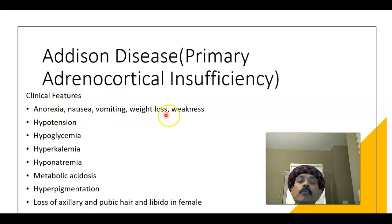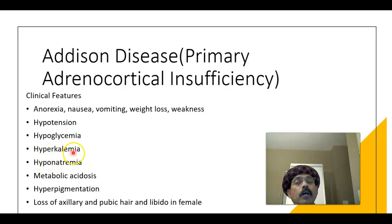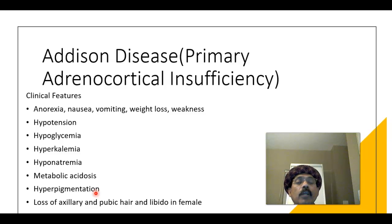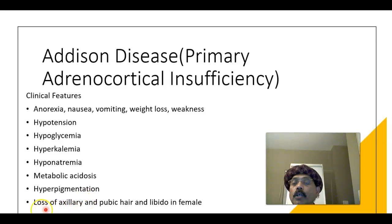Clinical features include anorexia, nausea, vomiting, weight loss, weakness, hypotension, hypoglycemia, hyperkalemia (high potassium), hyponatremia (low sodium), and metabolic acidosis. There is also hyperpigmentation due to excessive ACTH secretion from the anterior pituitary — adrenocorticotropic hormone is released along with melanocyte-stimulating hormone, which stimulates melanocytes causing hyperpigmentation. Additionally, there is loss of axillary and pubic hair and loss of libido in females.